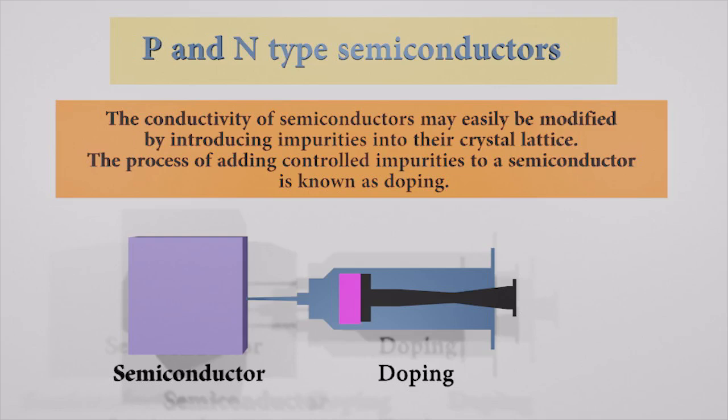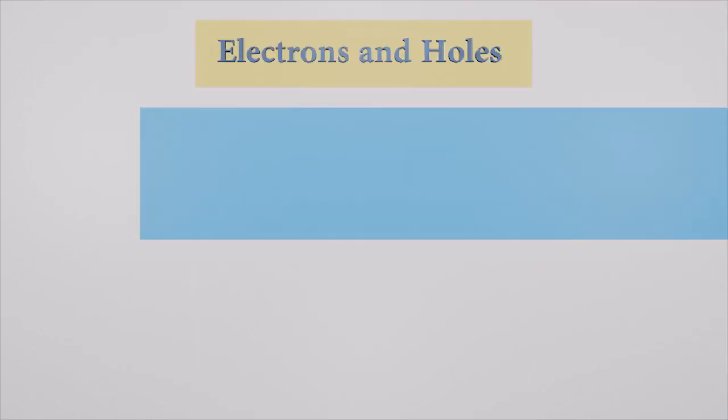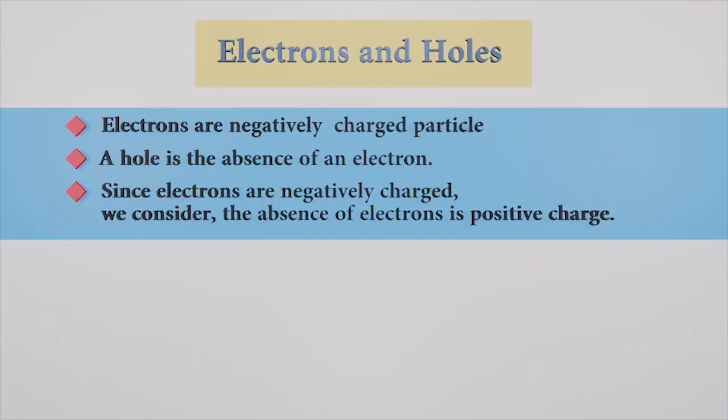The concentration of the dopant used affects the material's charge carrier concentration. There are two types of charge carriers, electrons and holes. We know electrons are negatively charged. A hole is the absence of an electron. Since electrons are negatively charged, we call the absence of electrons positive charge.